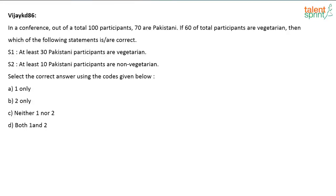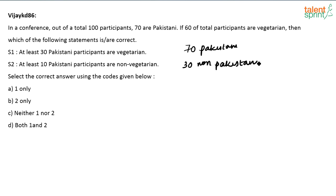The next question is posted by Vijay. In a conference, out of a total of 100 participants, 70 are Pakistanis. That means 30 are non-Pakistanis. Now, if 60 of the total participants are vegetarian, there are 60 vegetarians and 40 non-vegetarians.